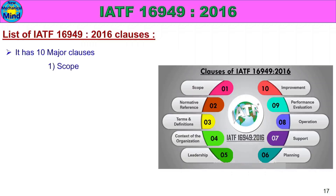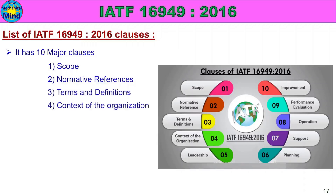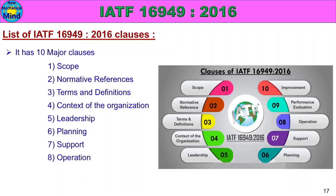Clause 1: Scope. Clause 2: Normative References. Clause 3: Terms and Definitions. Clause 4: Context of the Organization. Clause 5: Leadership. Clause 6: Planning. Clause 7: Support. Clause 8: Operation. Clause 9: Performance Evaluation. Clause 10: Improvement. This is the list of 10 clauses of IATF 16949:2016.